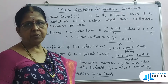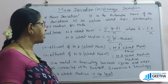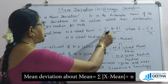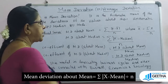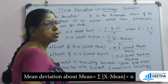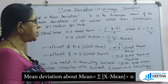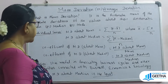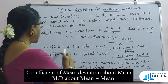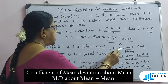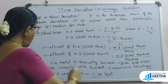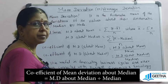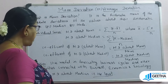For individual series, mean deviation about mean and median is the least value. The formula for mean deviation about mean is: summation of mod(x minus x-bar) divided by n, where x-bar equals summation x by n. Mean deviation about median is: summation of mod(x minus median) divided by n. The coefficient of mean deviation about mean is mean deviation about mean divided by mean. The coefficient of mean deviation about median is mean deviation about median divided by median.